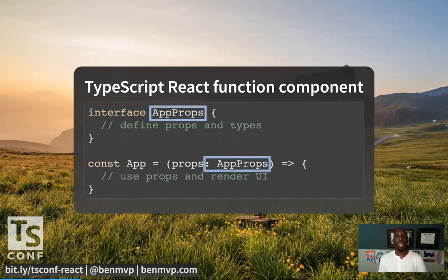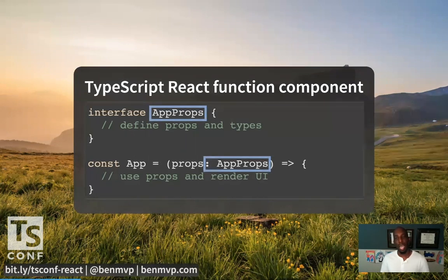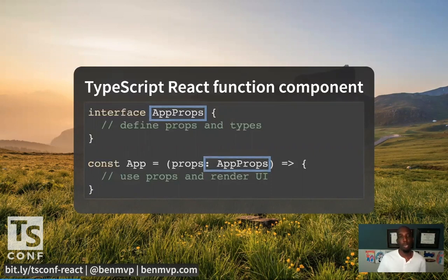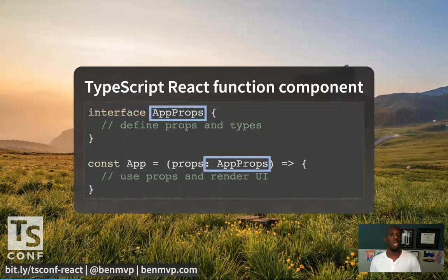One thing I want to make clear as we get started is that a React component is just a function. There's nothing really special about it — it's just something that takes props, an object, and returns JSX. It can be treated and typed like any other TypeScript function. You can use an interface to define the props — here I have 'interface AppProps,' which becomes the type of the props argument in the function. You can also define class components with TypeScript, but I'm only going to show functions throughout this talk. Hooks are the future.